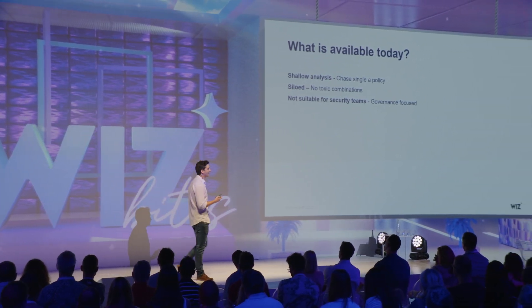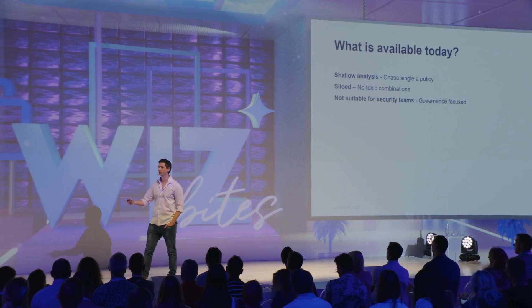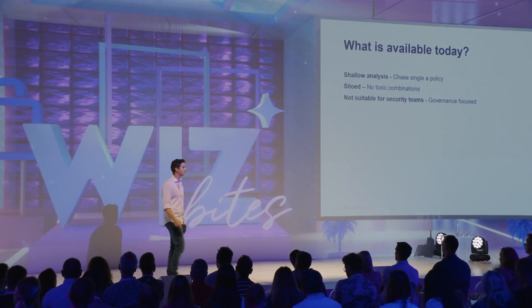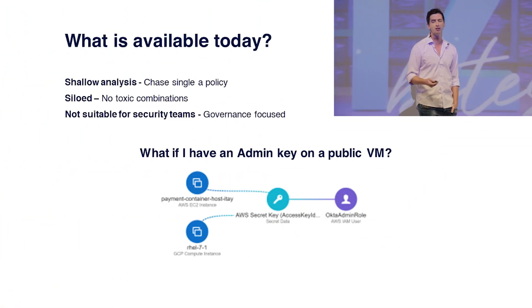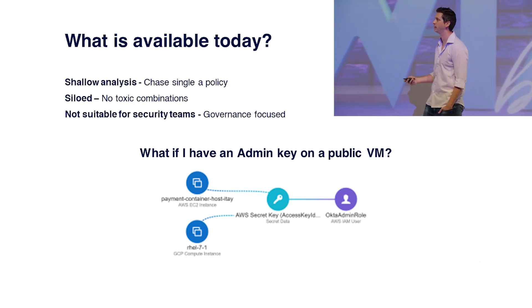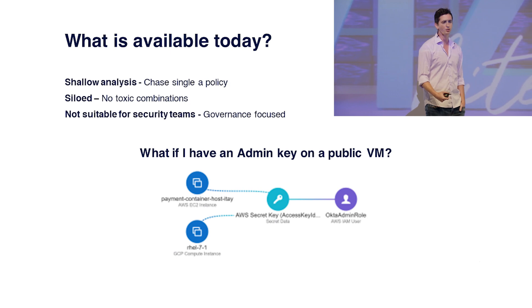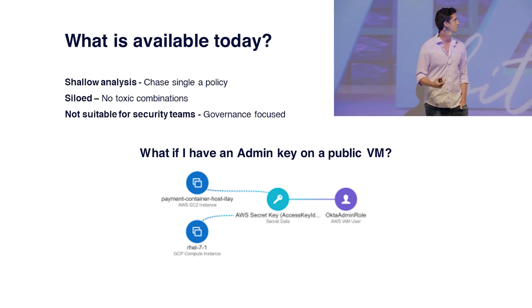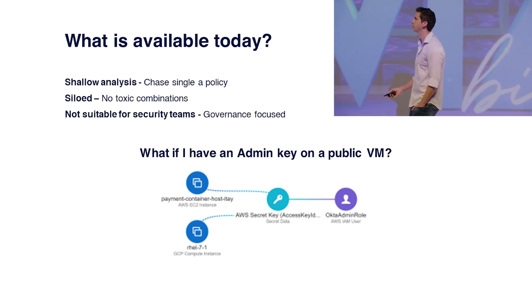Everybody knows the toxic combinations. If I have just this one risk factor, does it mean anything? No. And we're seeing security teams chasing very obsolete and very uninteresting risks in their environment. And the third thing is that identity tools are built for governance teams, not built for risk, because identity did not used to be such a risk-focused thing before. So teams really have a challenge answering a simple question: what if I have an admin key on a public virtual machine? Suddenly, in the cloud, this is very, very interesting.